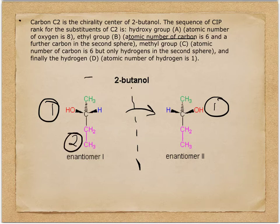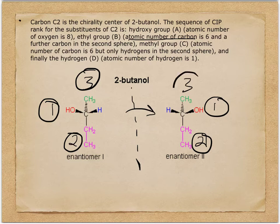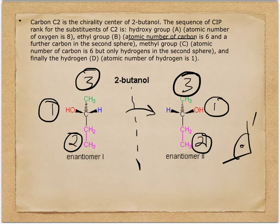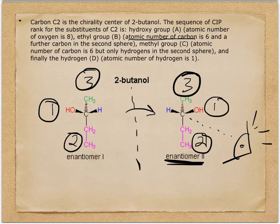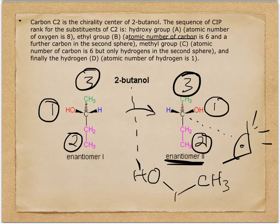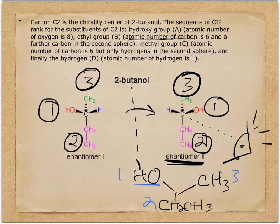So ethyl group is ranked two, methyl group is ranked three — and that's the same on both enantiomers. Now we want to see what direction they rotate. We have to look down the hydrogen bond, rotating the structure so the hydrogen is in the back. For enantiomer two, spinning so hydrogen is in the back, with the alcohol group, methyl group, and ethyl group arranged — and following one, two, three — we get a counterclockwise rotation.